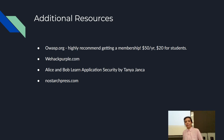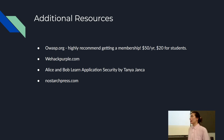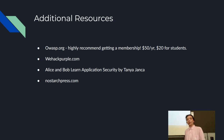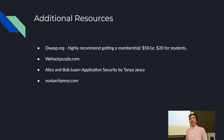Additional resources: OWASP.org — a membership is $50 a year and $20 for students, and includes access to learning labs, learning resources, and your own OWASP.org email. We Hack Purple by Tanya Jenka — she has a book called 'Alice and Bob Learn Application Security,' which is really thorough. No Starch Press publishes books on IT security and various programming languages.